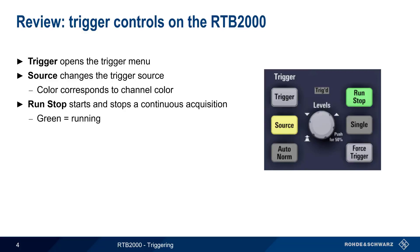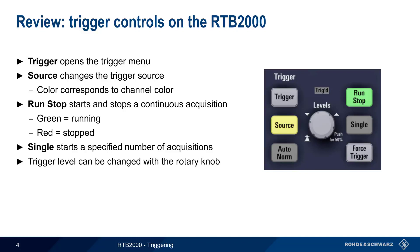The single button is used to start a specified number of acquisitions and then stop. Many triggers are based on the level of the signal, and the trigger knob can be used to manually set these levels. Note that pressing the knob sets the level to 50% of the signal amplitude, which is often a good starting point.